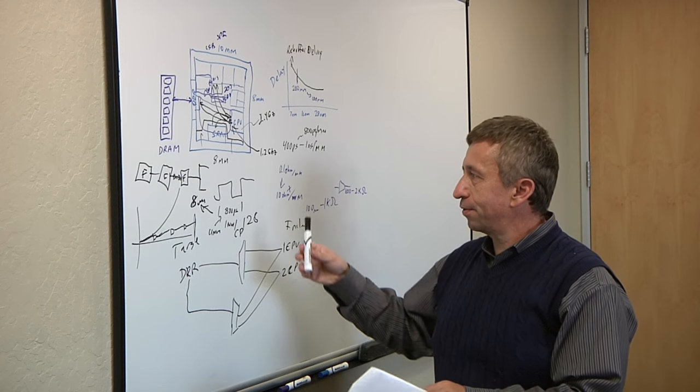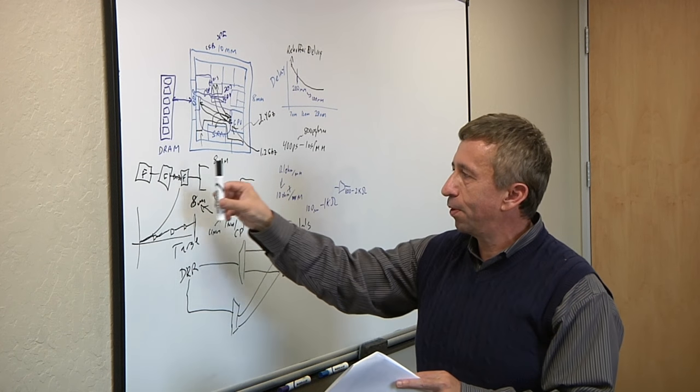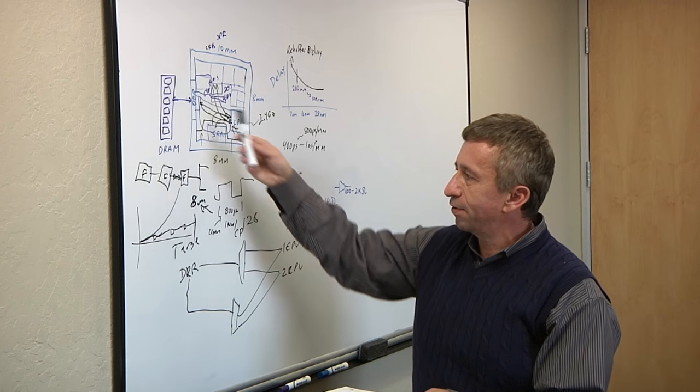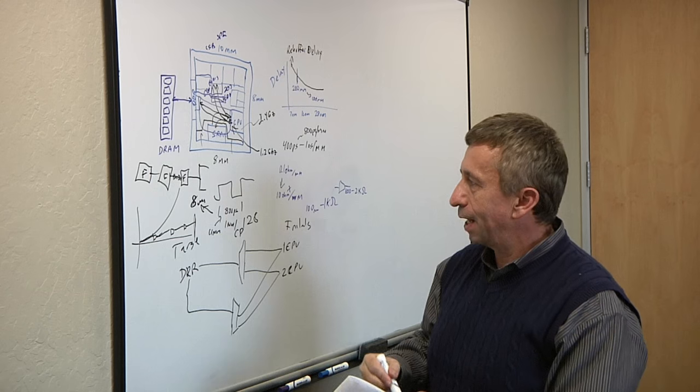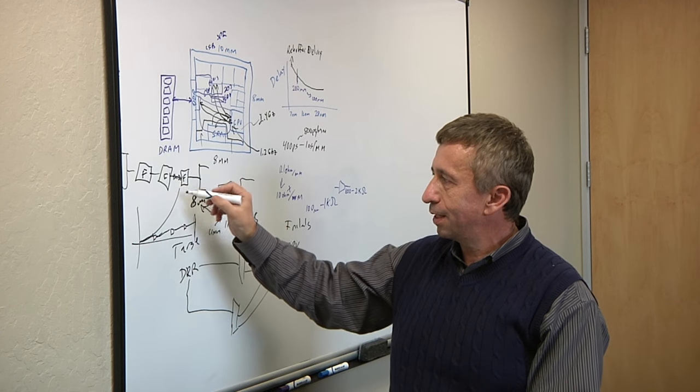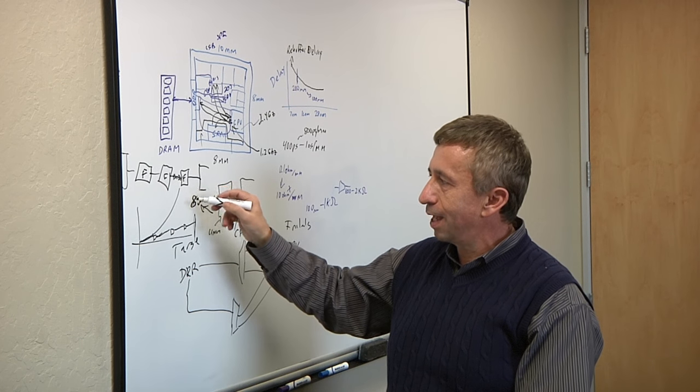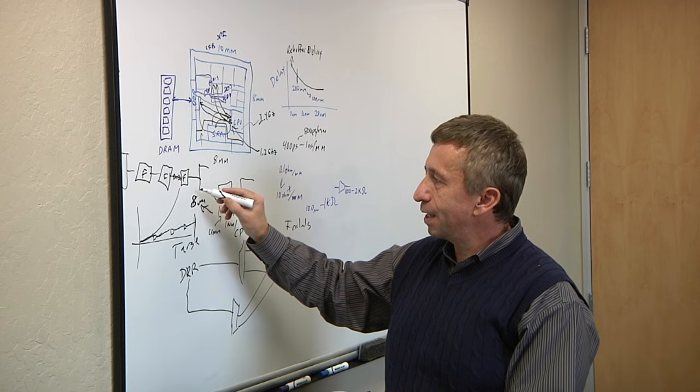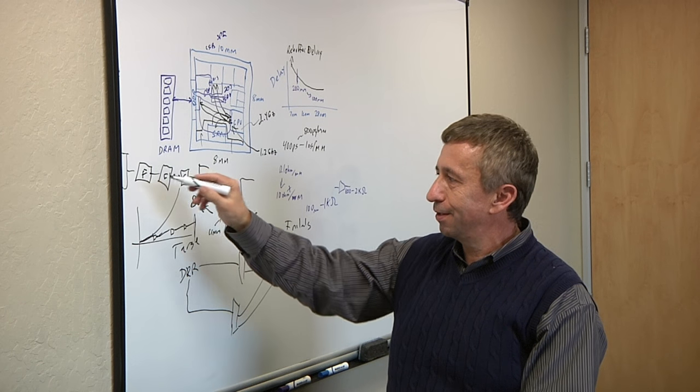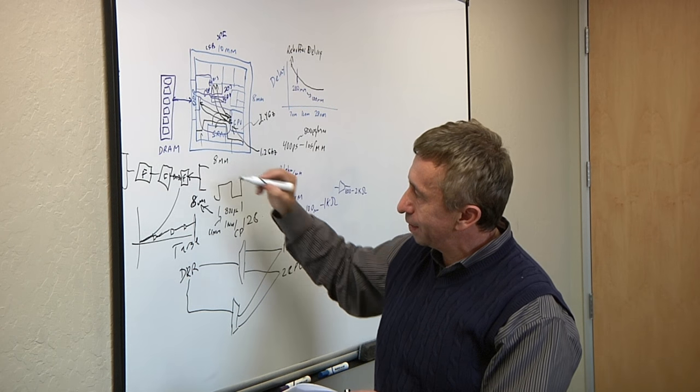As these points move far apart, we now have the problem that we can't get here in one cycle and I have to insert these registers. Now while EDA is good at managing buffers, it has no capability of saying, I can just put a flip-flop in here, because it changes the state machines and everything else.